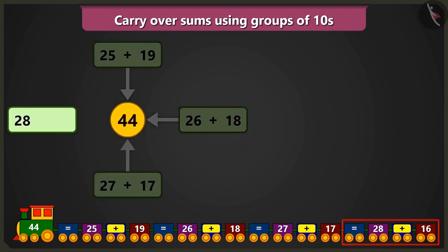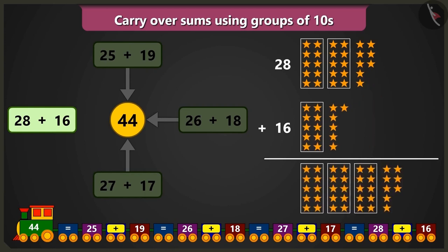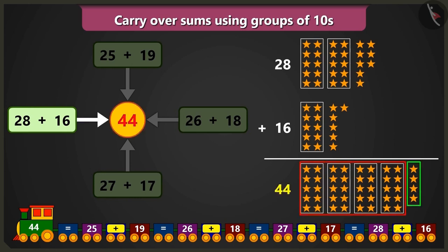Bubbly, now you tell me what is the sum of 28 and 16. 28 is 2 tens and 8 ones, and 16 is 1 ten and 6 ones. Now we will add 8 ones to 6 ones. Count after 8: 9, 10, 11, 12, 13 and 14. So here also there are 14, which means 1 ten and 4 ones. So 1, 2, 3, 4 tens and 4 ones, that are a total of 44.